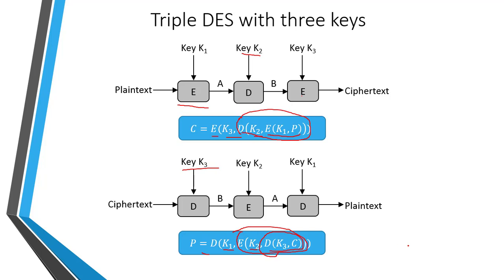Triple DES with three keys is used in many applications such as PGP and S/MIME, and backward compatibility with DES is provided when K1 equals K3. So this is the multiple encryption technique in which we have seen Double DES, Triple DES with two keys, and Triple DES with three keys. Among all of these, Triple DES with two keys is a very popular alternative to DES.